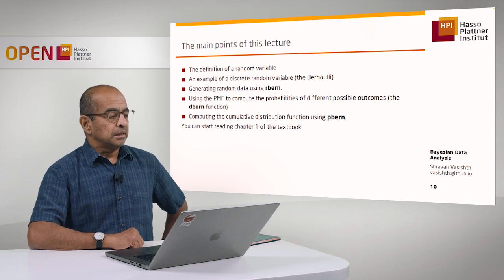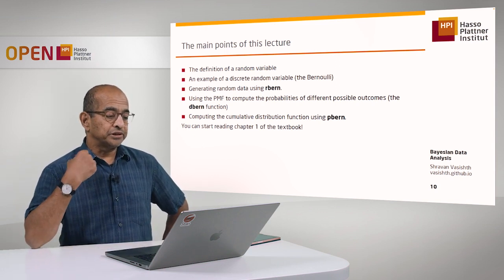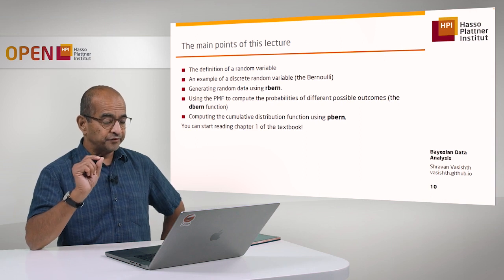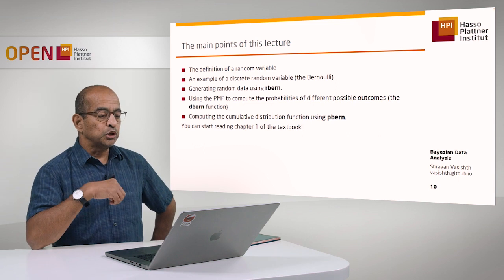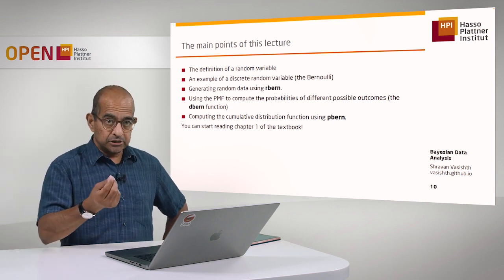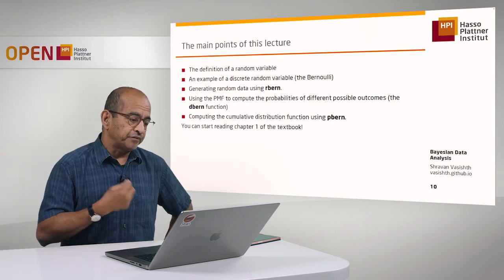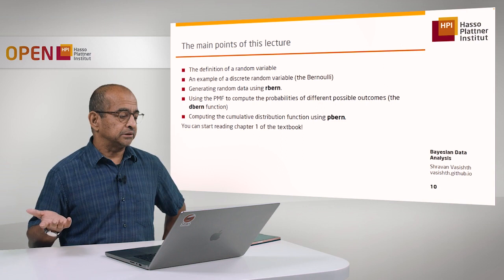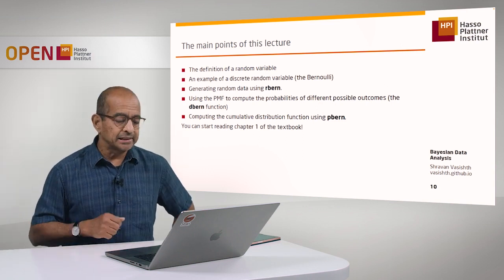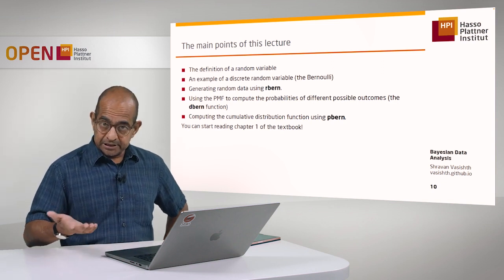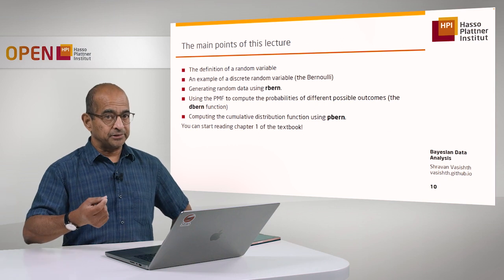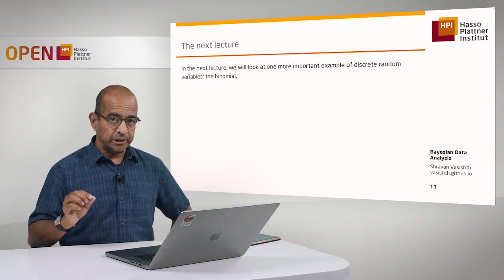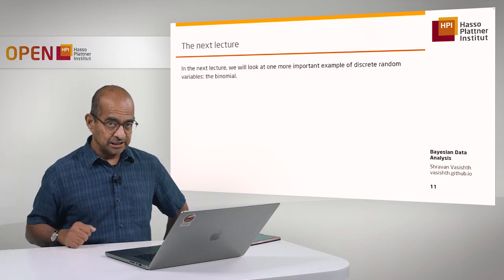So we've seen the definition of a random variable, an example of a discrete random variable — the Bernoulli — and how to generate random data using the rbern function from the extraDistr package. I've shown you how to compute the probability of a particular outcome using the dbern function, and cumulative probabilities using pbern. You can start looking at chapter one for more detail. In the next lecture, I'm going to talk more about discrete random variables, specifically the binomial.